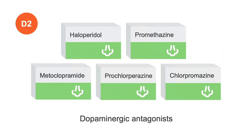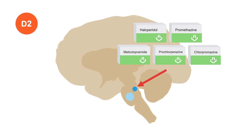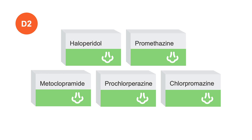Next are the dopaminergic antagonists. These are commonly used in the hospital, and there are several types. The vomiting center receives input from the chemoreceptor trigger zone and other areas via dopaminergic pathways, which are blocked by these medications. A commonly used drug here is metoclopramide, which has both anti-emetic and prokinetic effects, which we will discuss in later MedMastery lessons.